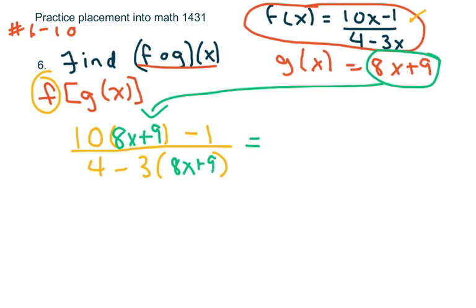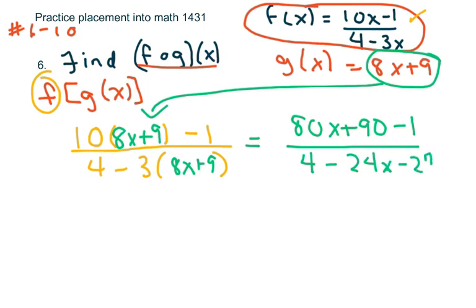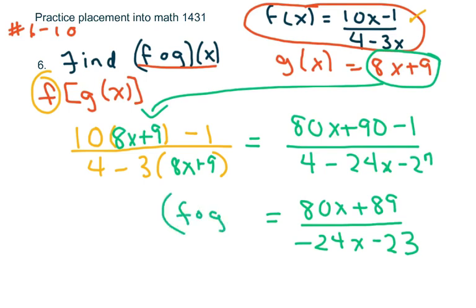So this is going to be 8x plus 9, and then put your minus 1 over 4 minus 24x minus 27. So when I simplify this, I'm going to get 80x plus 89 over negative 24x minus 23. And that would be my f of g of x.